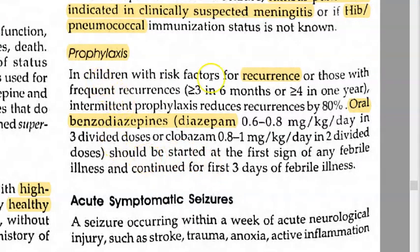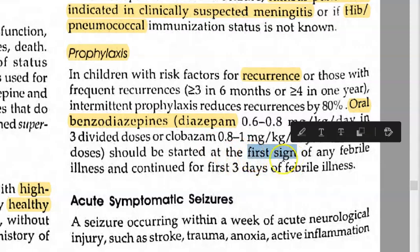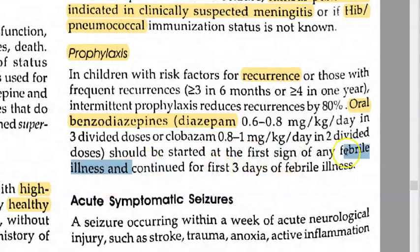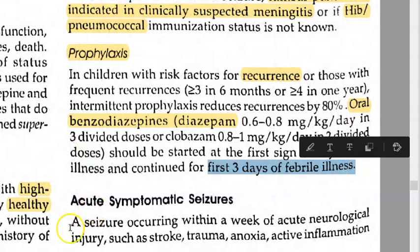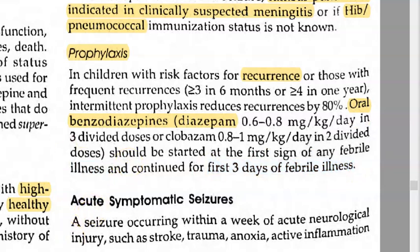They are also talking about prophylaxis. You can give diazepam to prevent febrile seizures. If you see signs of febrile illness, you can start it and continue it for the three days of the febrile illness. The prophylaxis drug is diazepam.